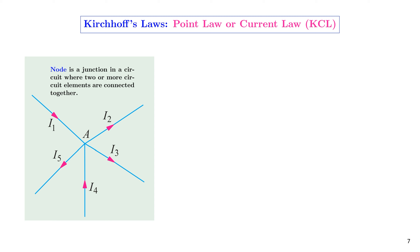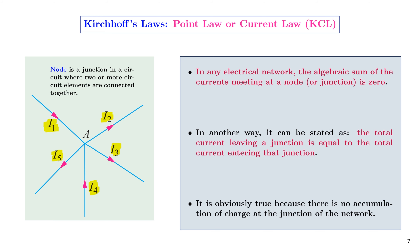To understand the current law, let us consider a node A in an electrical circuit to which a current I1 is approaching. Another current approaching the junction is I4. I2, I3, and I5 are currents that leave the junction. The Kirchhoff's current law states that in any electrical network, the algebraic sum of the currents meeting at a node or junction is zero. In another way, the total current leaving a junction is equal to the total current entering the junction.